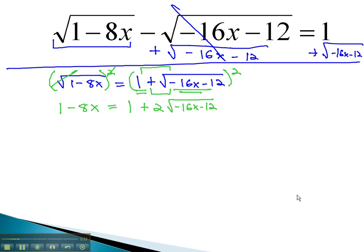Then, we square the last term, and squaring a square root will simply give you what's inside. Negative 16x minus 12.